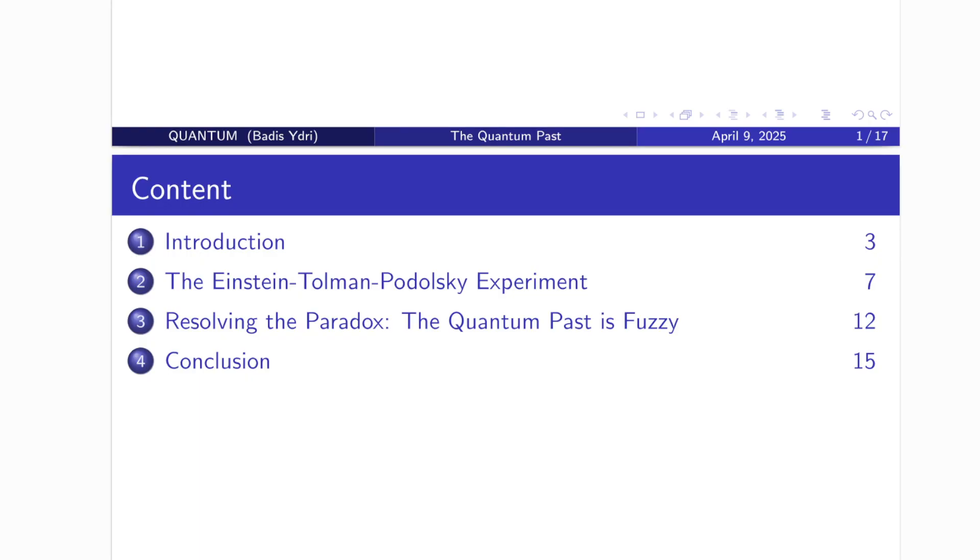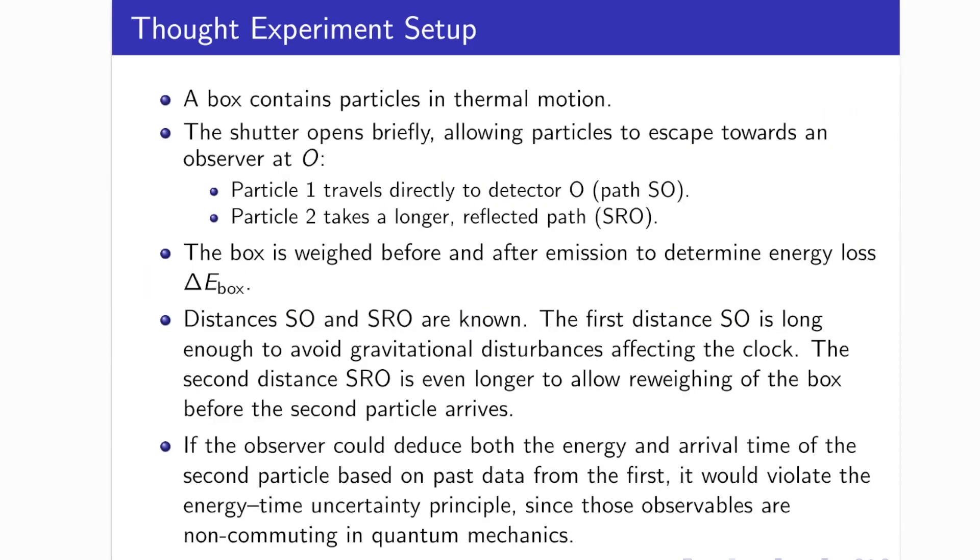The Einstein-Tolman-Podolsky Experiment. In 1931, Albert Einstein, Richard Tolman, and Boris Podolsky proposed a simple but astonishing thought experiment. It wasn't about predicting the future. It was about something far more unsettling, whether we can know the past. Their experiment can be divided into four parts. Part 1. The Setup.